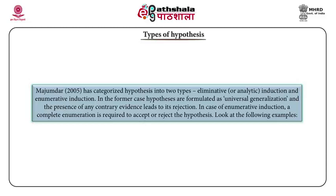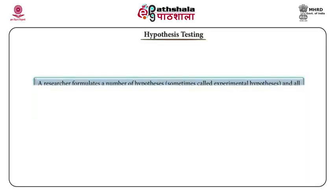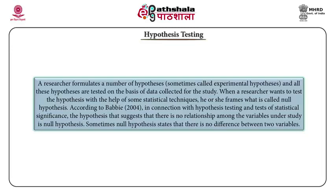P. K. Majumdar has categorized hypotheses into two types: eliminative or analytic induction, and enumerative induction. In the former case, hypotheses are formulated as universal generalizations and the presence of any contrary evidence leads to rejection. In the case of enumerative induction, a complete enumeration is required to accept or reject the hypothesis. A researcher formulates a number of hypotheses — sometimes called experimental hypotheses — and all of these are tested on the basis of data collected for the study.